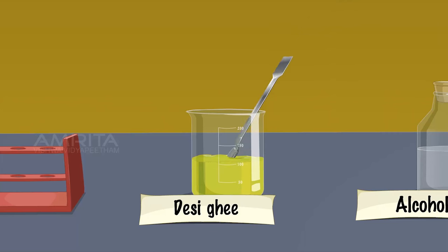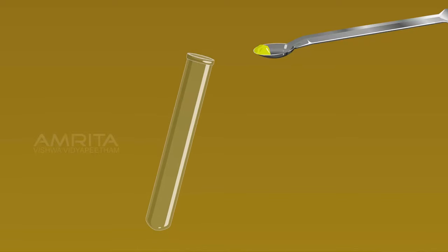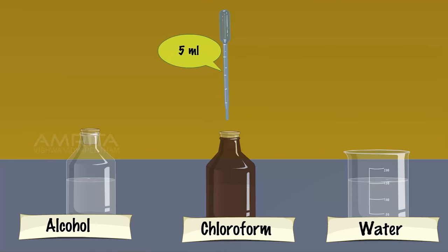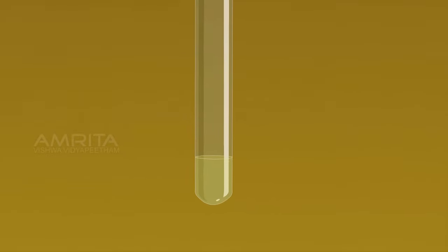Again, take a small amount of desi ghee in another test tube. Using another dropper, take about 5 ml of chloroform and add it into the test tube containing desi ghee. Desi ghee is miscible, i.e., mixable in chloroform.